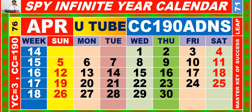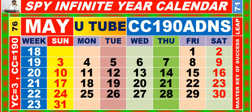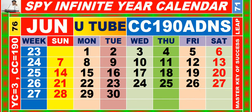Calendar for the month of April having calendar code equal to 190. Calendar for the month of May having calendar code equal to 190. Calendar for the month of June having calendar code equal to 190.